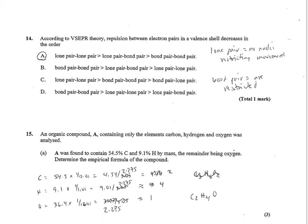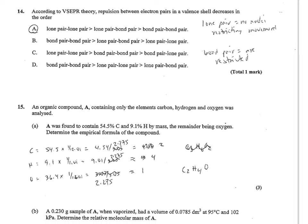Number 14, according to VSEPR theory, repulsion between electron pairs decreases in the order. Remember, lone pairs have no nuclei restricting their movement, so they take up the most space or create the most repulsion, whereas bond pairs have the most restricted movement. So it's going to be A, lone pair-lone pair are going to repulse the most, bonding to bonding are going to repulse the least, and lone to bonding are going to be somewhere in between.